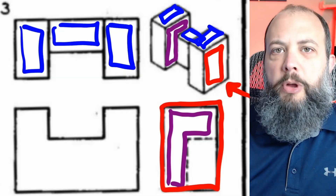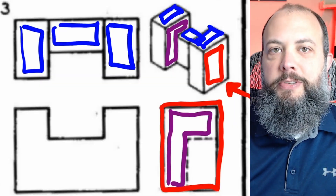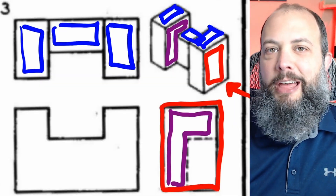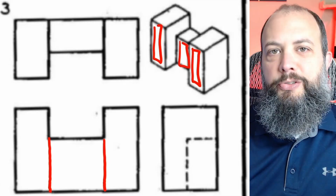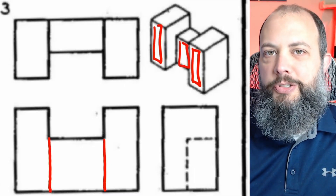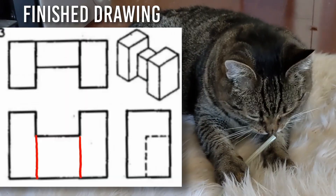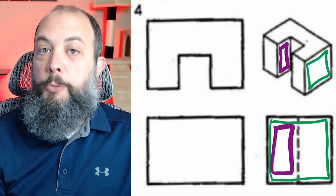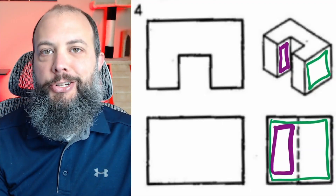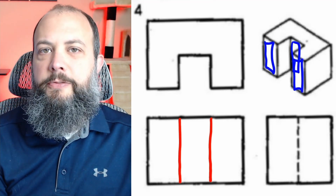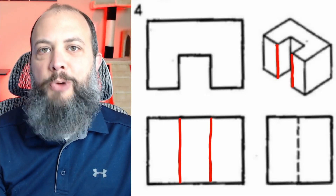Number three: the top view looks correct with those three blue rectangles, and the right side view looks correct — there's the red visible rectangle, and the purple surface is hidden behind it, which is why there are hidden lines marking its boundaries. To finish the front view, it just needs two vertical lines to separate the three distinct rectangular surfaces. For number four, the top surface and right view look good, and to finish it, draw two vertical lines to divide the front face into three vertical rectangles.